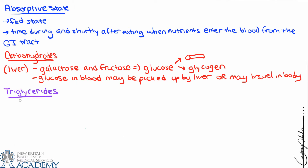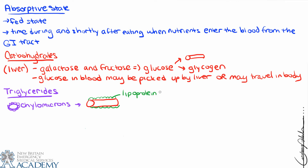The glucose arriving from the small intestine follows the same pathway to the liver. The liver may keep that glucose and convert it to glycogen, use it to make energy, or the glucose may pass through the liver and travel elsewhere in the body. Non-glucose monosaccharides have to be converted to glucose right away.